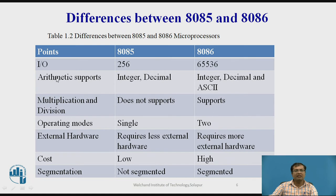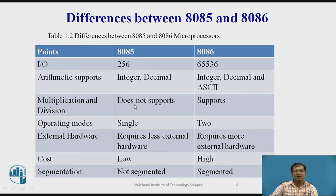Regarding input/output: the 8085 supports 256 I/O devices, since it has 8-bit data lines (2 raised to 8 = 256). The 8086, having 16 data lines and 20 address lines, supports 65,536 different I/O devices. Regarding arithmetic support, the 8085 supports integer and decimal, while the 8086 supports integer, decimal, and ASCII. Regarding multiplication and division: the 8085 does not have multiply or divide instructions — it performs multiplication by successive addition and division by successive subtraction. But the 8086 supports multiplication and division instructions directly.